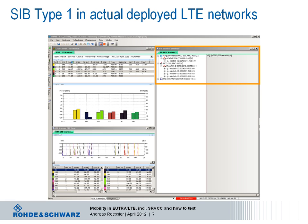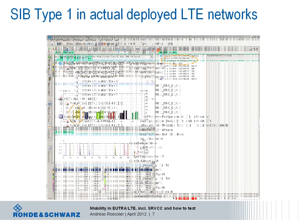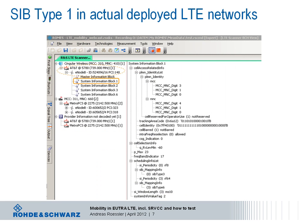If we expand the tree for the particular base station with the strongest detected signal, we can check system information block type 1. There's relevant information for the cell selection criteria. For P-max it's plus 23 dBm, which corresponds to the maximum allowed device power anyway. The QRx level minimum is set to minus 60, which needs to be multiplied by 2, leading to minus 120 dBm. And there is no QRx level offset part of that SIB type 1, so it's assumed to be 0 dBm.